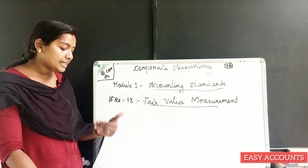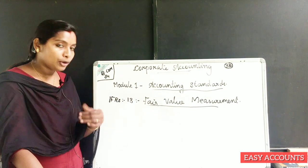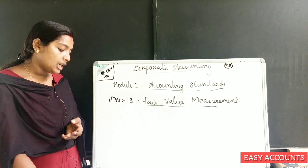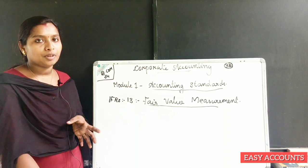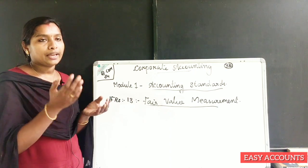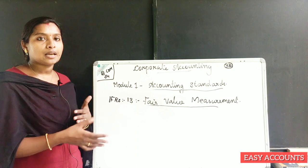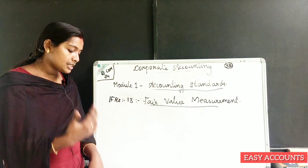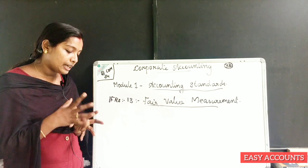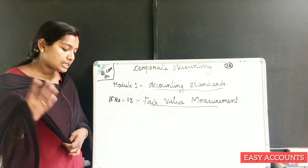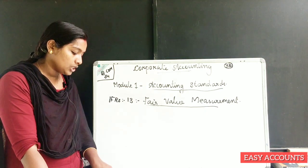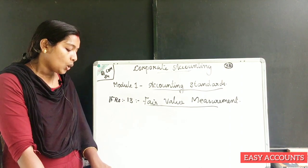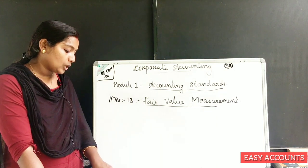When measuring an asset, we consider the price given by market participants at the measurement date to determine fair value. For a liability, we consider the price paid to transfer it. When measuring the price, an entity uses the assumptions that market participants would use when pricing an asset or a liability under current market conditions, including assumptions about risk.